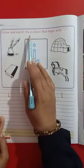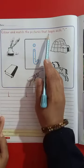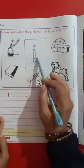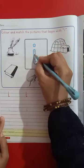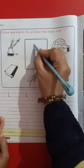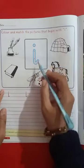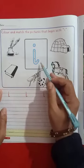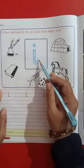Color and match the pictures that begin with I. I ko hum ne trace karna hai achse se trace karna hai. Or phir ham ne jho pictures given hai, ujjah me match karna hai.